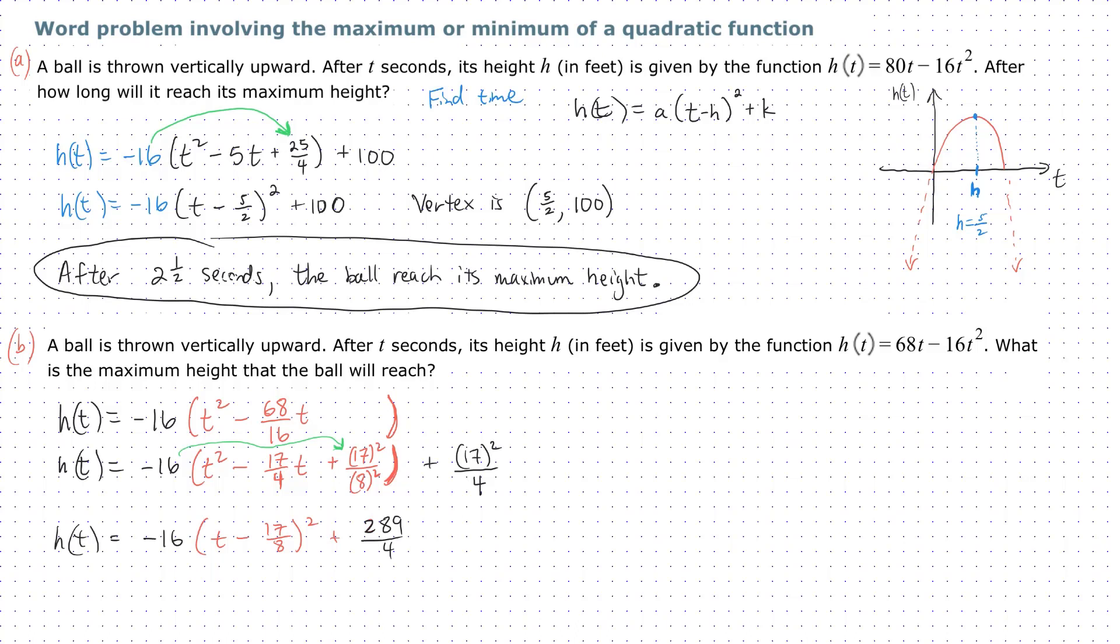What is the maximum height that the ball will reach? Once again, we're going to read the vertex. The vertex is (17/8, 289/4). Now we're going to extract the information from the vertex and answer the question. I'm going to do 289 over 4 really quick—that's 72 and 1/4.